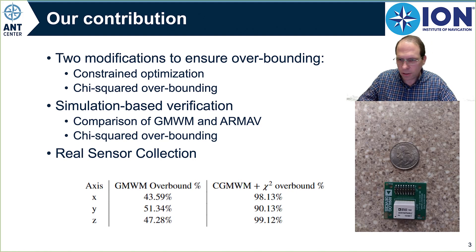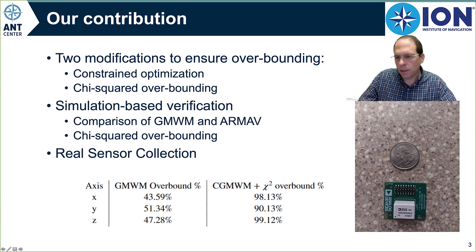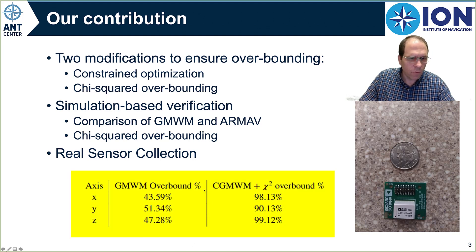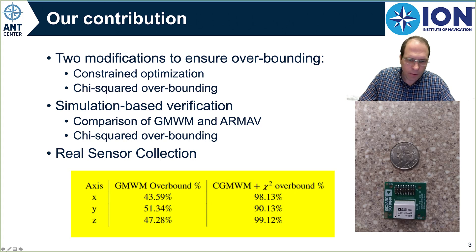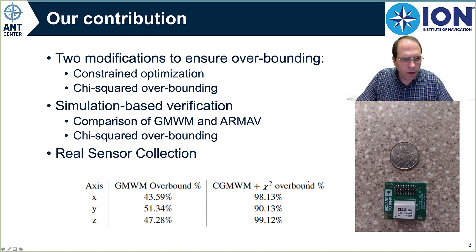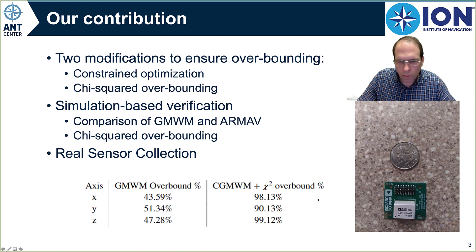We also did this with a real sensor, as shown here in the bottom right. This is a commercial-grade Analog Devices IMU. We did an Allen Variance characterization of this sensor 20 different times, and inside of that you can see the overbounding. If we just use the traditional GMWM technique, we overbounded approximately 50% of the time. Using our constrained and chi-squared overbounding, on one axis we were bound to 98%, another one 90%, another one 99% — so we're approaching that 95% overbounding, which is what we were shooting for using the chi-squared overbound percentage that we set it to.